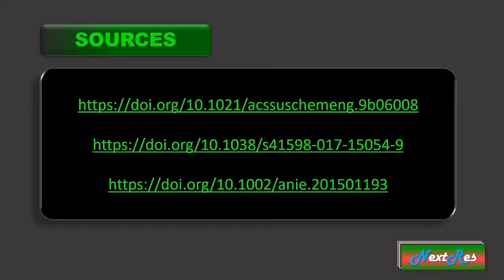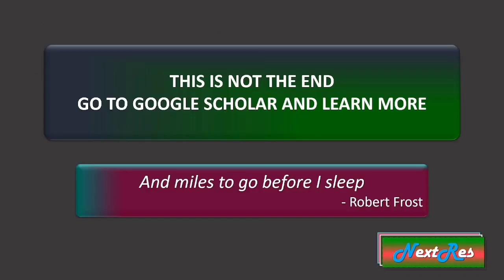These are the sources from which I have taken help. You can go through these research papers. You can also go to Google Scholar and do your own literature survey on how to prepare green carbon quantum dots. There are some other good materials like meta-phenylenediamine which can give rise to green to cyan colored CQDs.